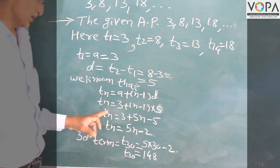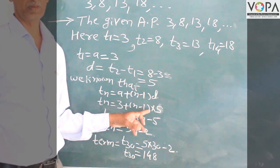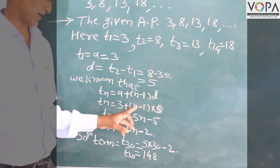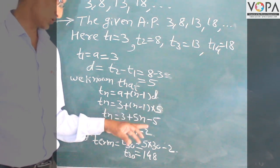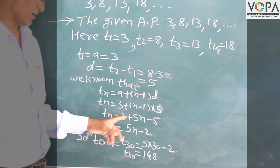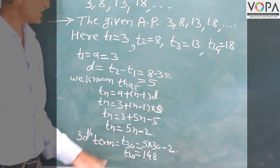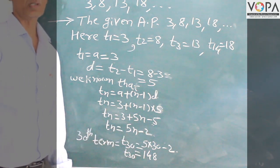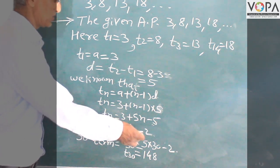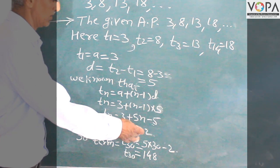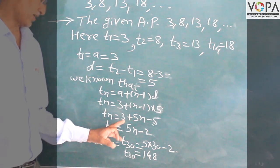Calculating this equation: tn is equal to 3 plus n minus 1 multiplied by 5. Expanding: 5 multiplied by n gives 5n, and 5 multiplied by minus 1 gives minus 5. So tn equals 3 plus 5n minus 5. Combining the constants: 3 minus 5 equals minus 2. Therefore, tn is equal to 5n minus 2.